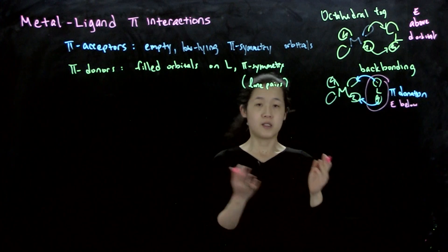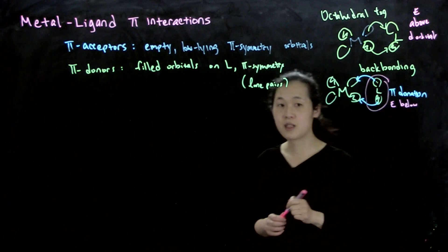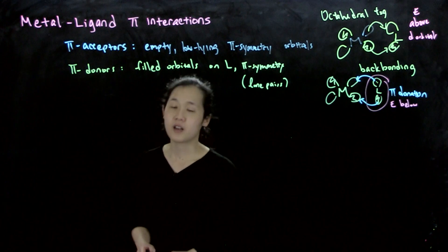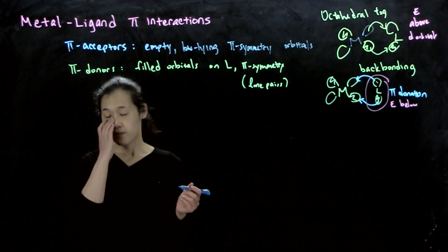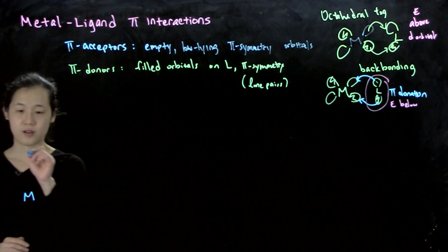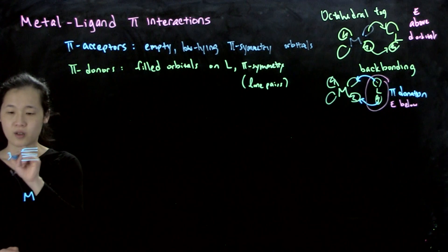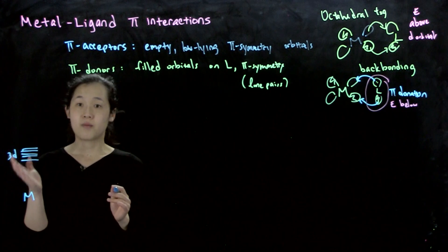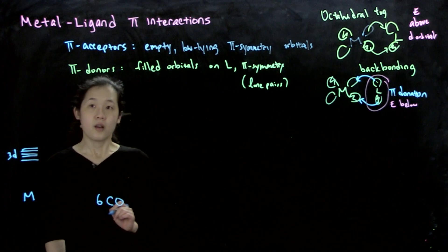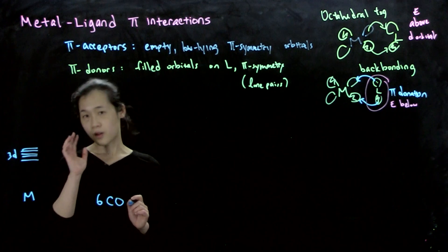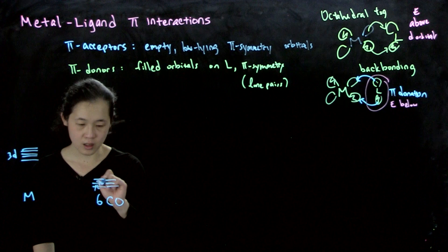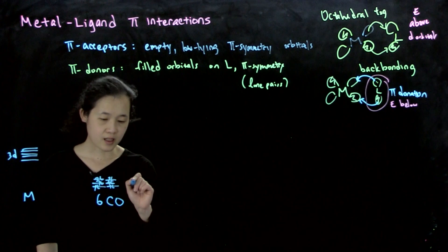That results in whether the d orbitals go down or up. So let me do an illustration. Starting from the very beginning of my MO diagram: on my left I have the metal. Let's just do the d orbitals — I'll ignore the s and p orbitals for now. Let's say these are our 3d orbitals, all at the same energy for the free metal atom. And then suppose we have 6 CO ligands — so our 6 CO ligands give us 6 sigma-symmetry lone pair orbitals down here. These are our 6 L sigma HOMOs.